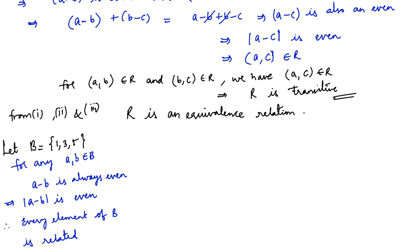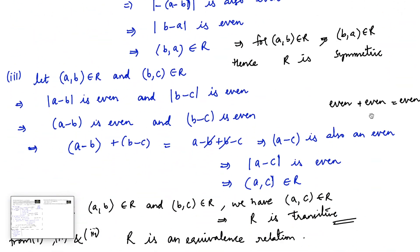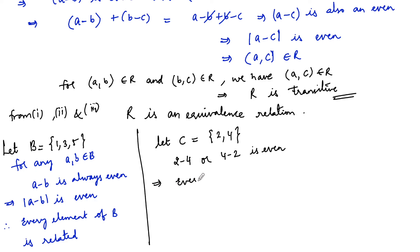Now let us consider another set C = {2, 4}. Here we can see there are two elements which are even numbers. For any two even numbers, the difference is always even — whether you consider 2 - 4 or 4 - 2, the result is an even number. So every element of set C is related to each other.